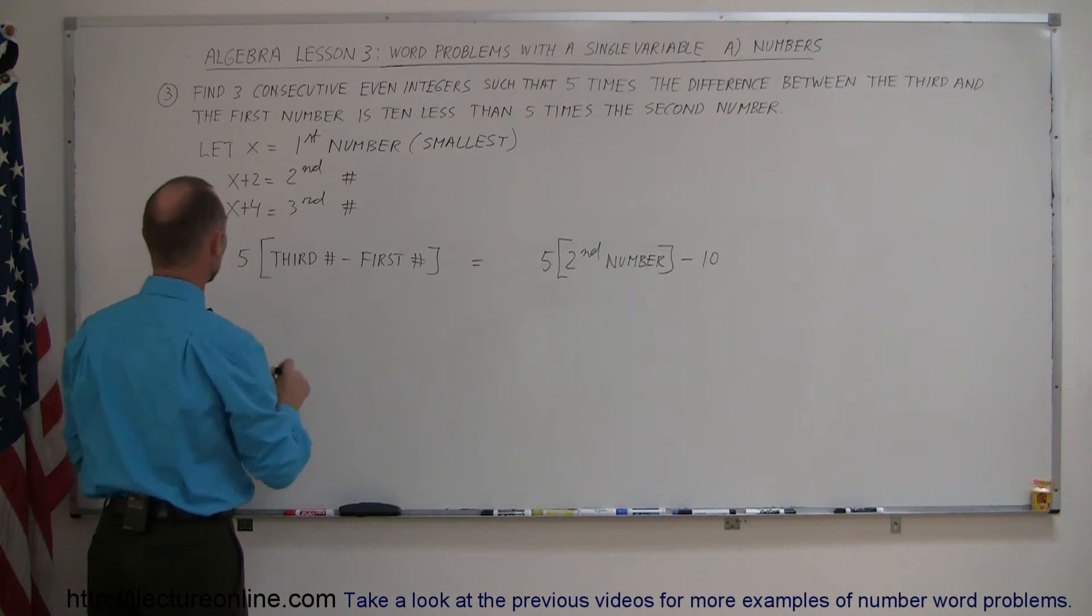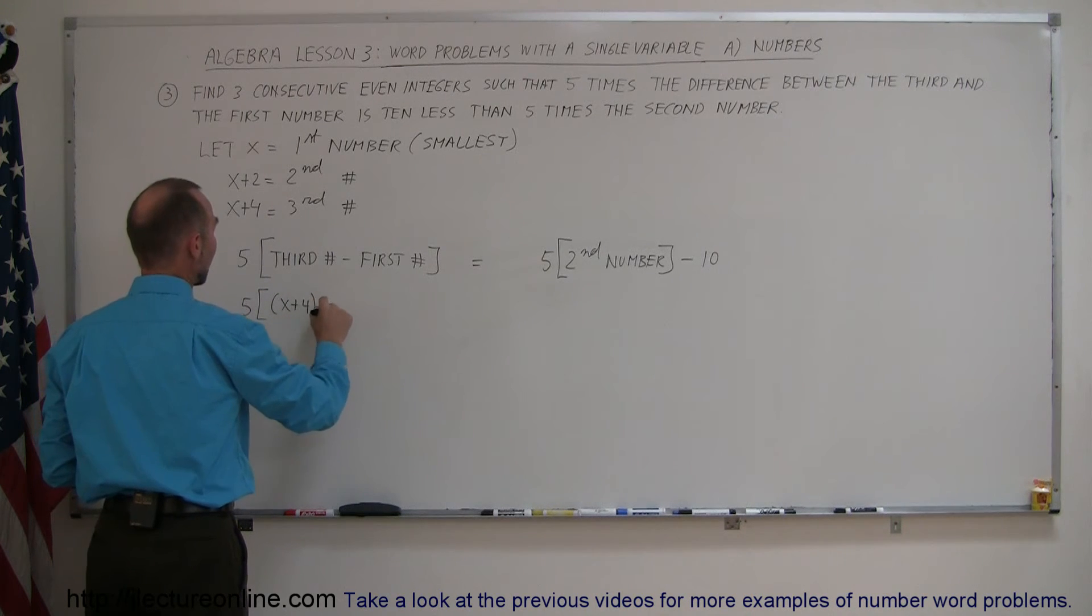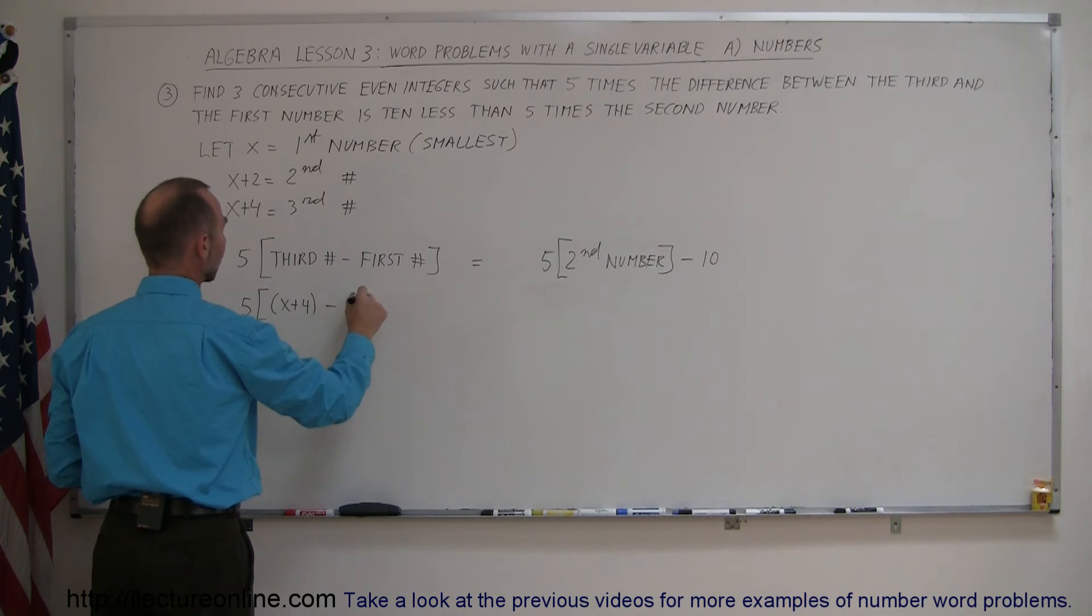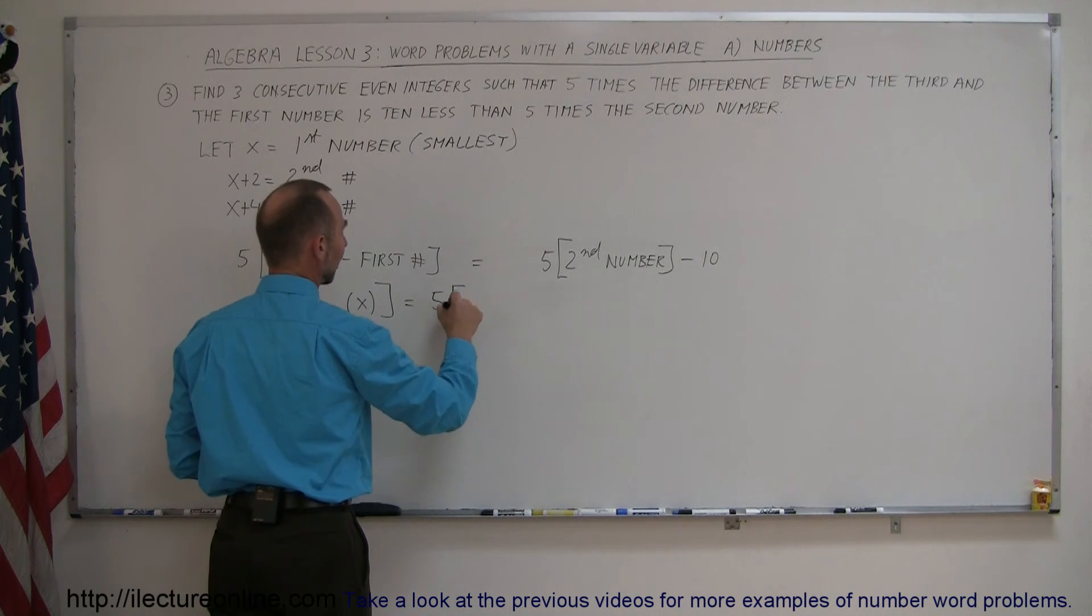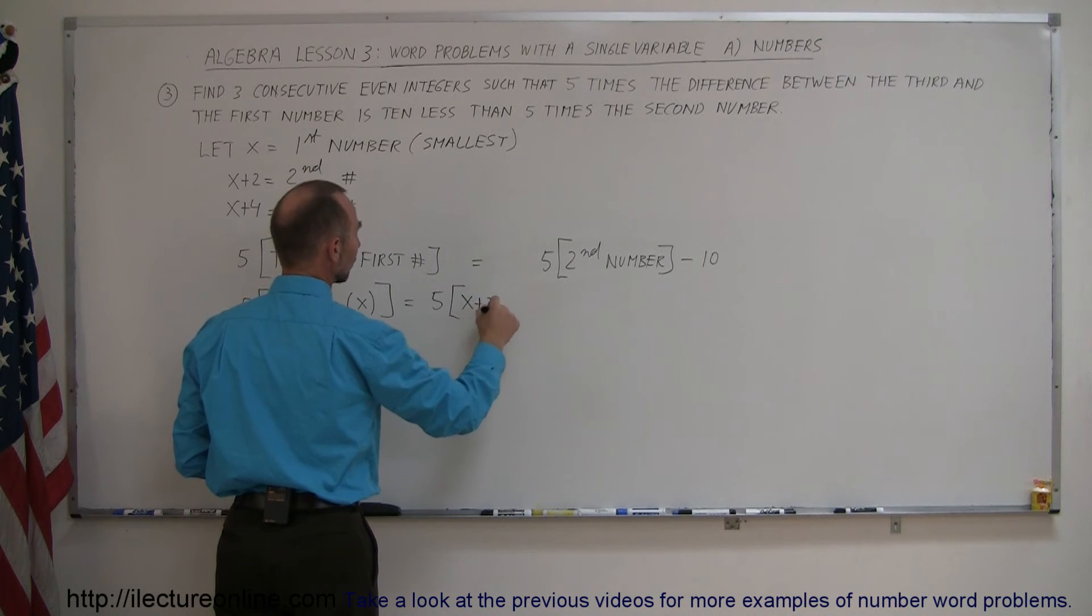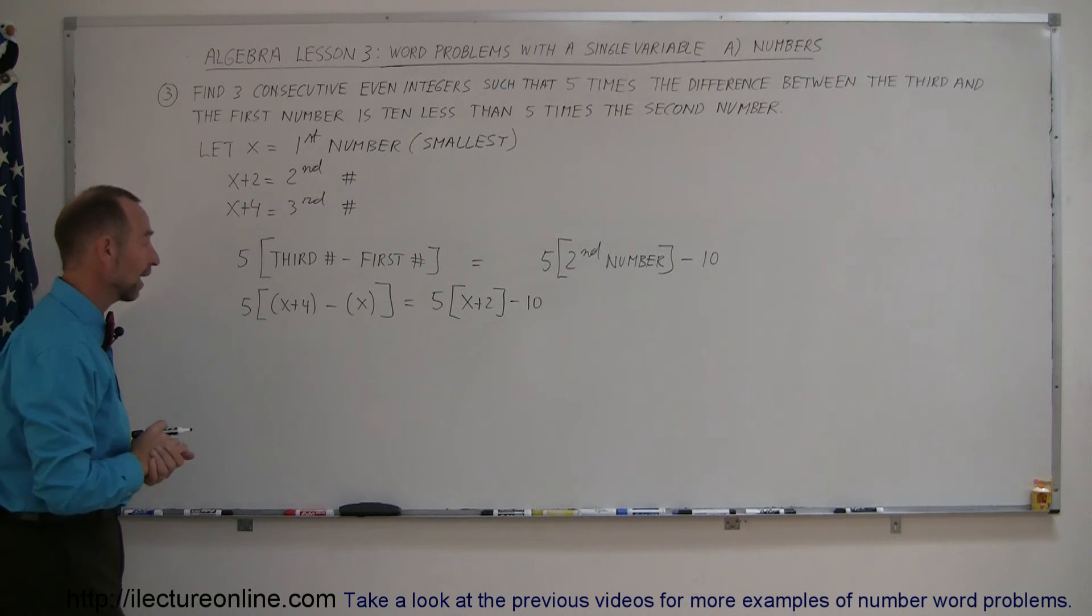The third number is x plus 4. So we have 5 times x plus 4 minus the first number, which is x. And that is equal to 5 times the second number, which is x plus 2, minus 10. And now we're going to go ahead and solve that equation, solve it for x.